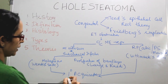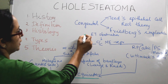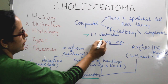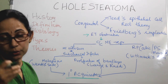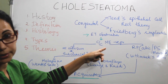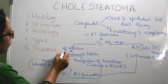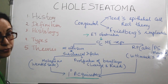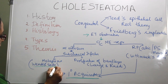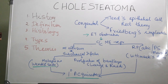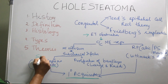For primary acquired cholesteatoma, the basic pathology begins with eustachian tube obstruction, which leads to chronic middle ear negative pressure. This can result in middle ear effusion or subclinical infection. In that case, Sade's theory of metaplasia applies — where the middle ear cleft epithelium undergoes squamous metaplasia.